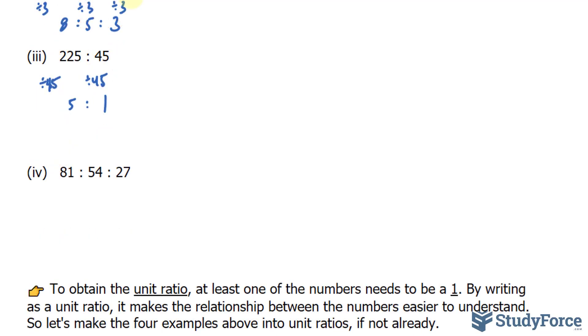In our last example, we have 81 to 54 to 27. All of these are divisible by 9, and I know what you're thinking. They're also all divisible by 27. But since I thought of 9 first, I'll just use 9. So divide each by 9. I get 9, and here I get 6, and here I get 3. We're not done yet. These are all divisible by 3. This becomes a 3, a 2, and a 1. So now you know how to reduce.